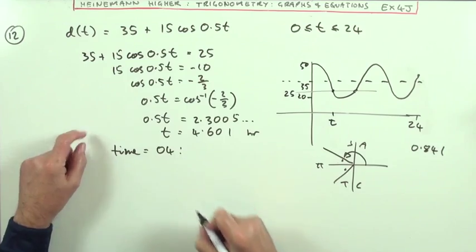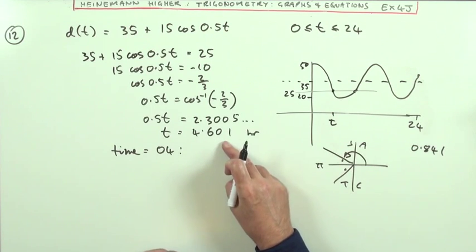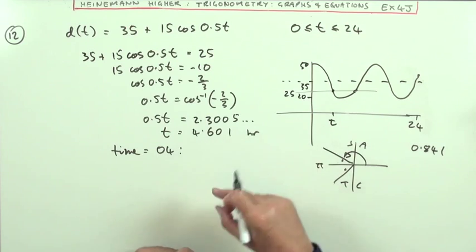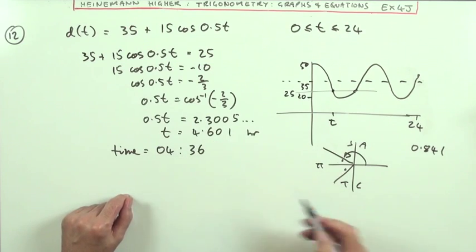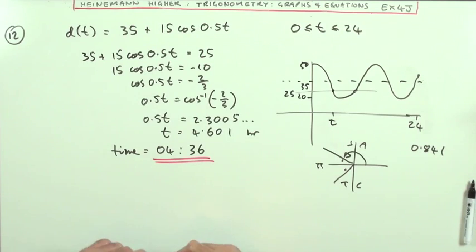So that means the time's going to be, well, the 4 means 4 hours after midnight, so 04. The decimal part, 0.601 multiplied by 60 to change into minutes, will be 36. So I'll have to leave before 04:36.